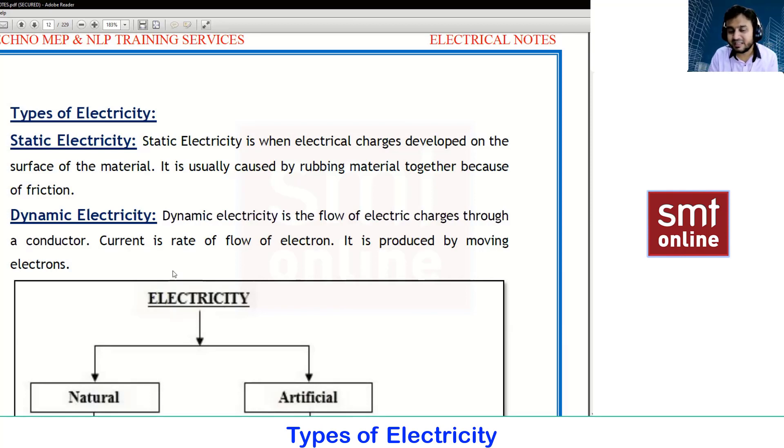For example, when you rub your hands we are getting some energy - frictional energy or heat energy. Whenever charges are developed on the surface, that is static energy. Next we have dynamic electricity.